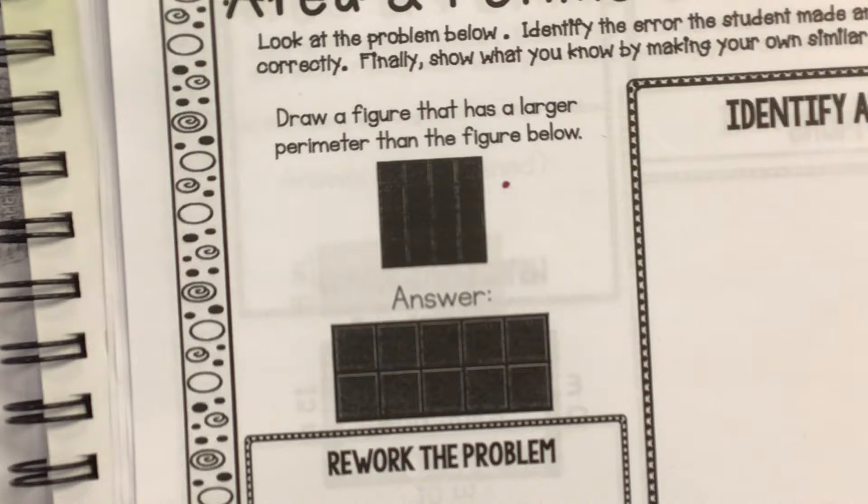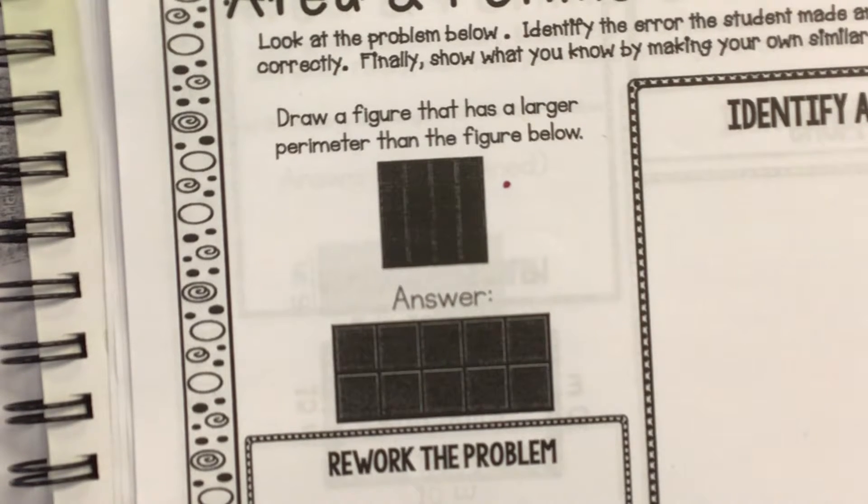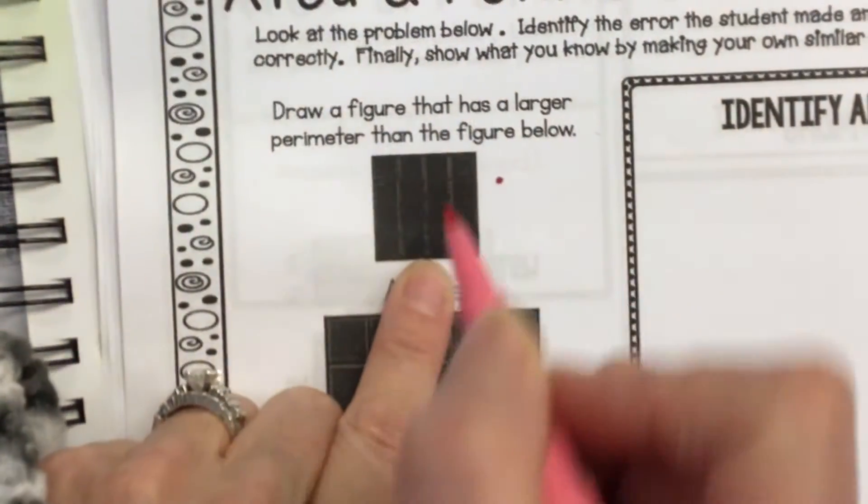Okay, the directions for the student that made a mistake say draw a figure that has a larger perimeter than the figure below. What do you need to know in order to follow those directions? What do you need to know, Trista?